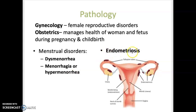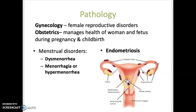Endometriosis is the presence of endometrial tissue outside of the uterus, as shown in the diagram with the dark red color indicating abnormal growth locations. Normally the endometrium should only be inside the uterus as the inner lining, but in this case it's growing outside the uterus, outside the fallopian tubes, and outside the ovaries. There will be bleeding in these locations when menstruation occurs, and it can be very painful.